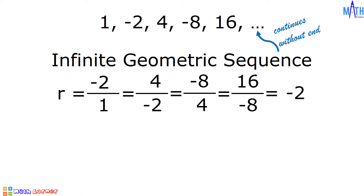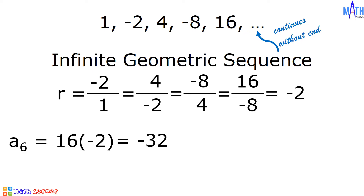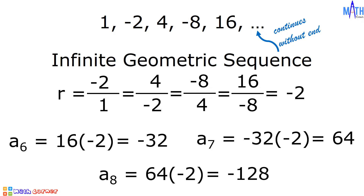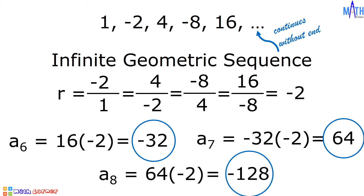To determine the sixth term, we will multiply the fifth term and the common ratio. 16 times negative 2 is equal to negative 32. To determine the seventh term, we multiply negative 32 and negative 2, which equals 64. To determine the eighth term, we multiply 64 and negative 2, giving negative 128. The next three terms are negative 32, 64, and negative 128.